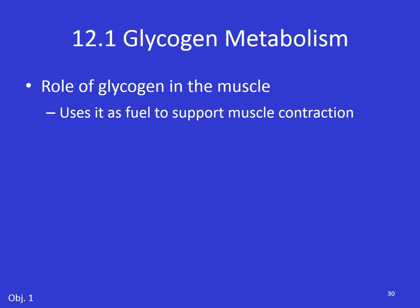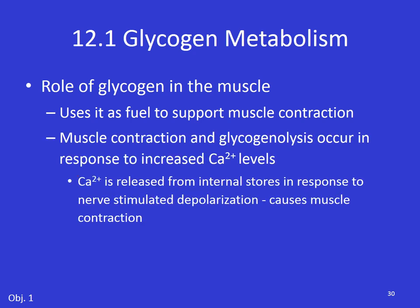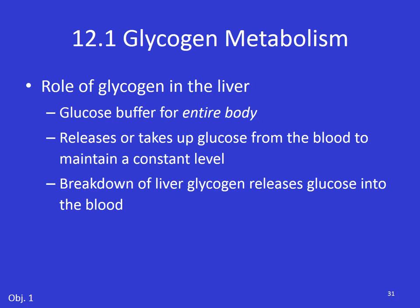In the muscle, glycogen is used to support muscle contraction. Muscle contraction and concurrent glycogenolysis occur in response to increased calcium levels. Calcium is released from internal stores in response to nerve-stimulated depolarization. If you tell your muscles to contract, you're releasing calcium to stimulate those muscles and they eat up some glycogen. However, glycogen in your liver is a glucose buffer for your entire body — glycogen in your muscles is just for that muscle. What the liver does is release or take up glucose from the blood to try to maintain a constant level. Your blood sugar will hopefully vary pretty gently throughout the day.